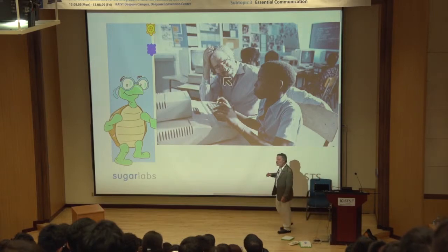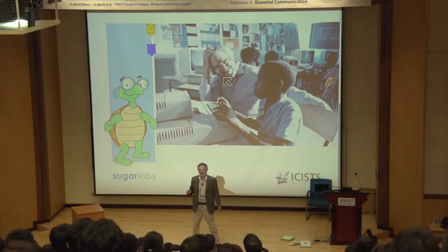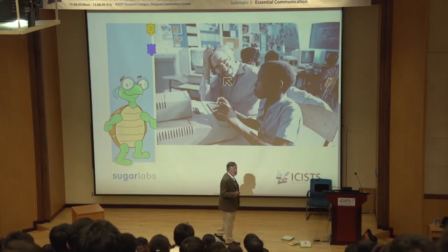I want to wind the clock back and tell you about the origins of the One Laptop per Child project. My colleague Seymour Papert was a pioneer in technology and learning. He was studying with Piaget in Geneva in the late 1950s and early 1960s. He had the insight that computation was a thing to think with. He got computer time in London, got kids in front of a computer, and did experiments in the guise of Piaget's constructivist theories of learning.